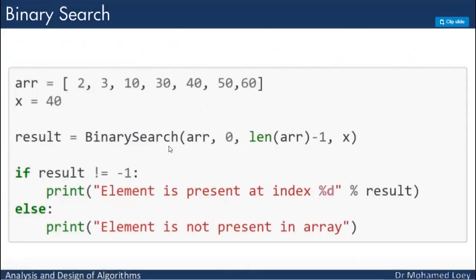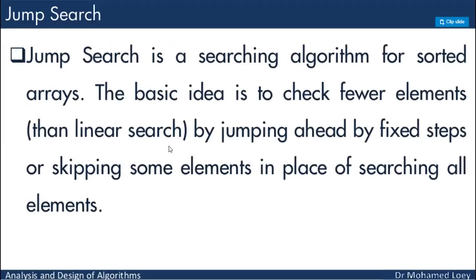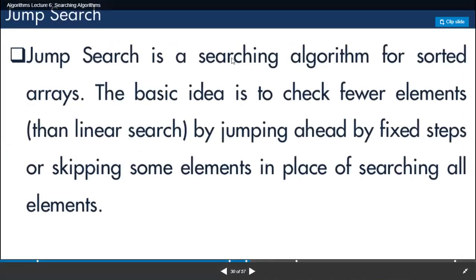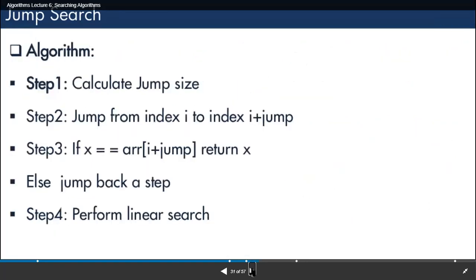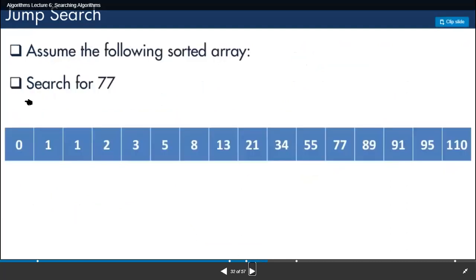Here comes the jump search. The first concept: jump search is a searching algorithm for sorted arrays — just like binary search, it can only be applied on sorted arrays. The basic idea is to check fewer elements than linear search by jumping ahead by a fixed number of steps, or skipping some elements.